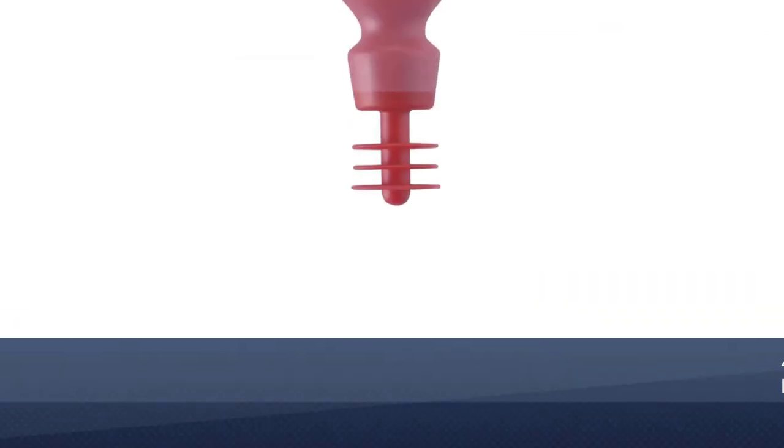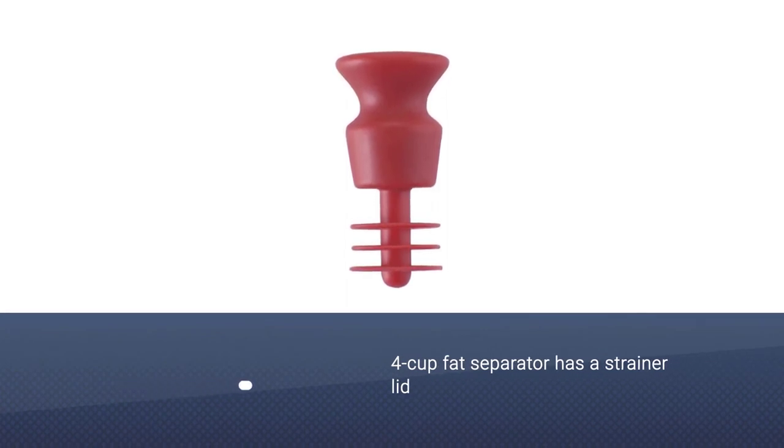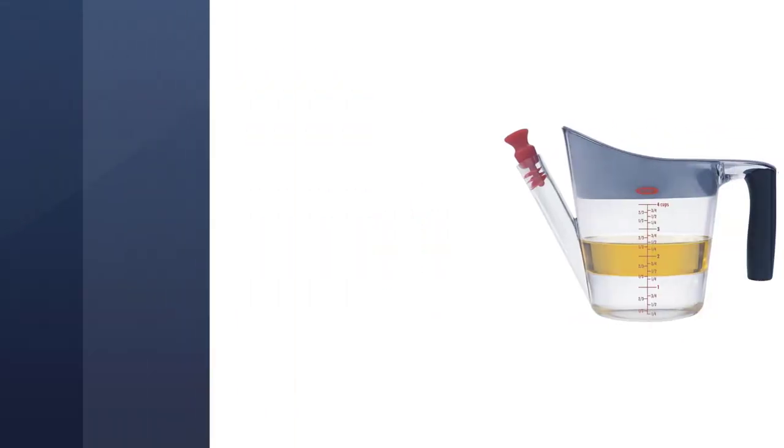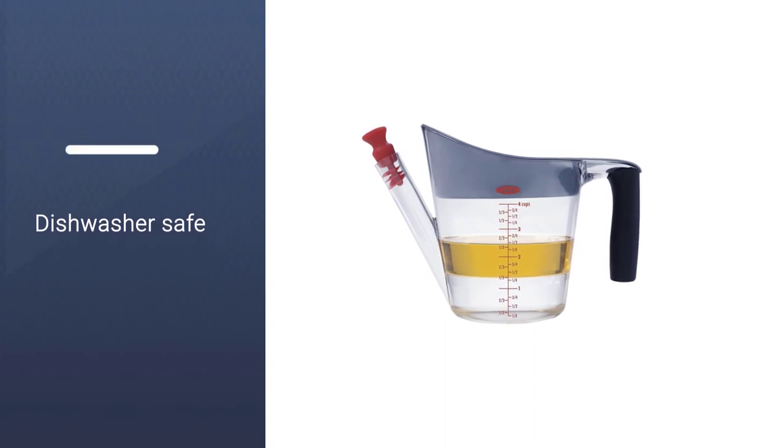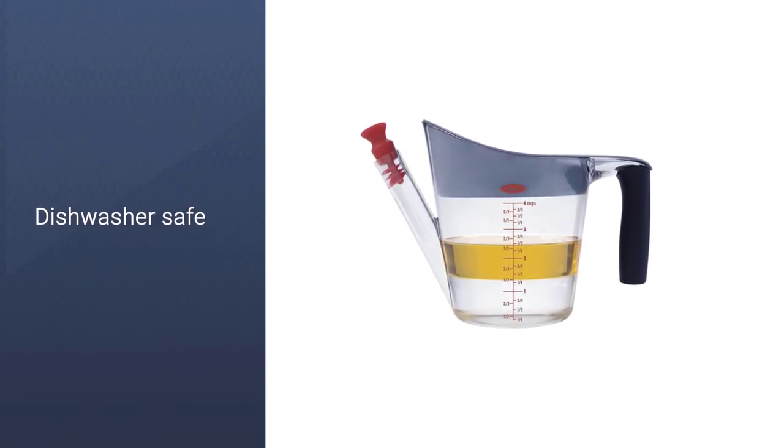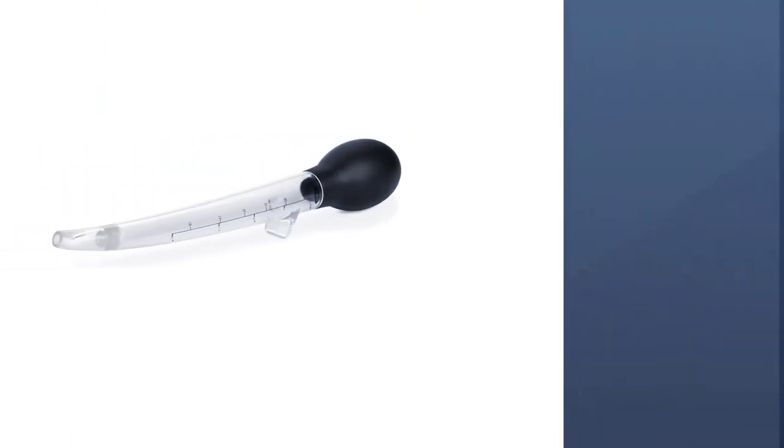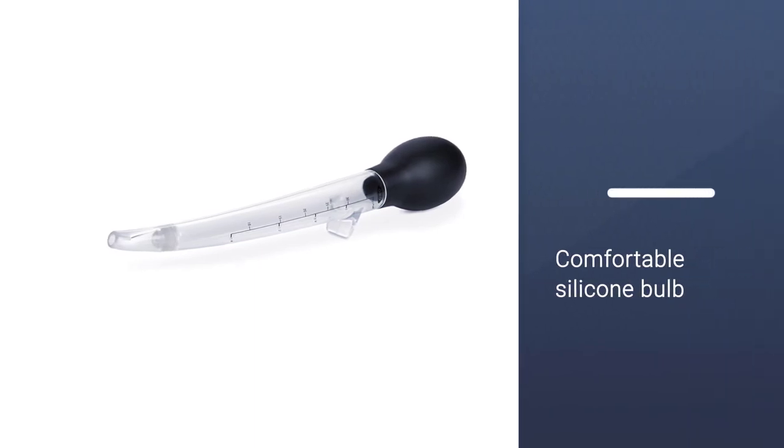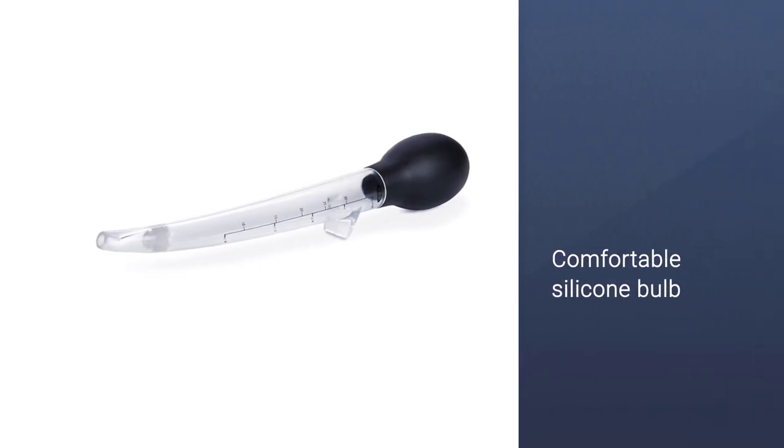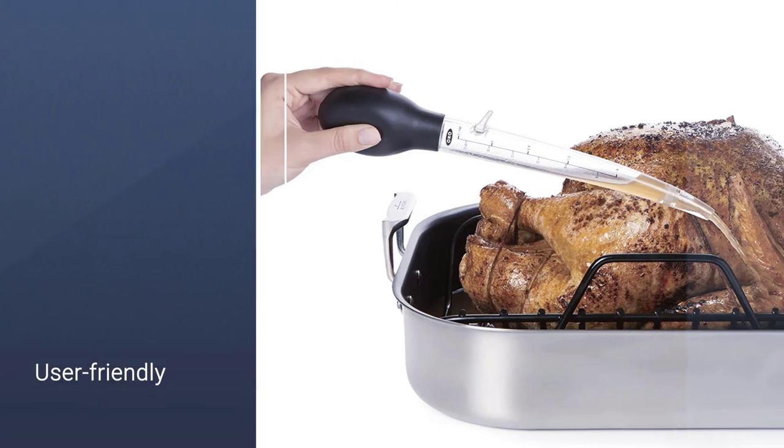So you can easily see how much juice you've collected. The four-cup fat separator has a strainer lid to keep the large bits out and an innovative plug on the spout that keeps fat from entering the spout. Both the baster and fat separator are dishwasher safe, but a cleaning brush is also included if you prefer washing by hand.